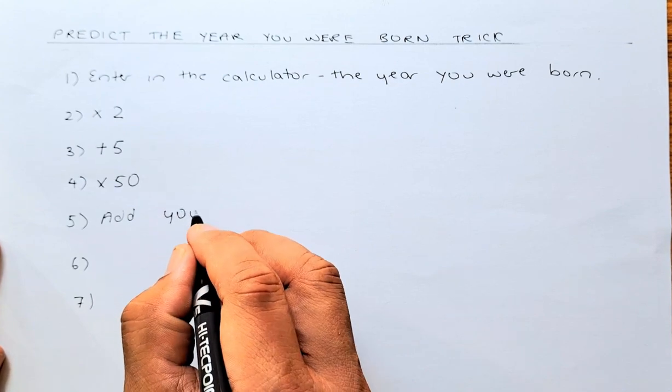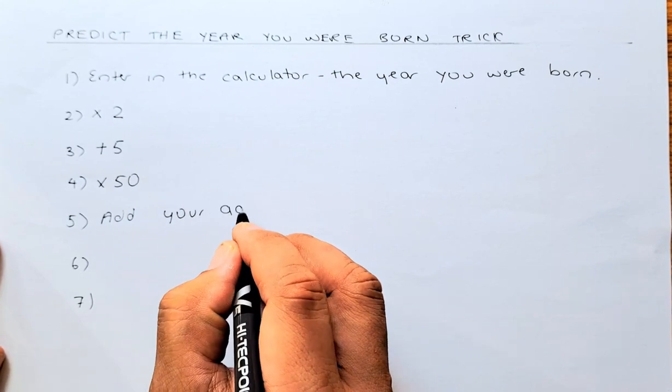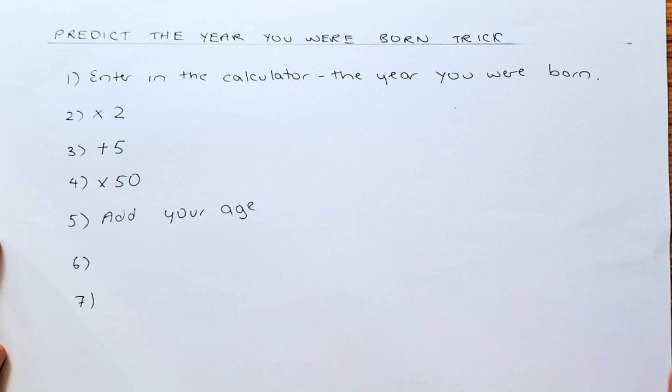So if you are 45, then you add plus 45. If you are 12, just plus 12. Are you on track? Yes.